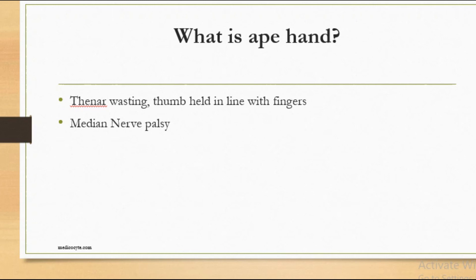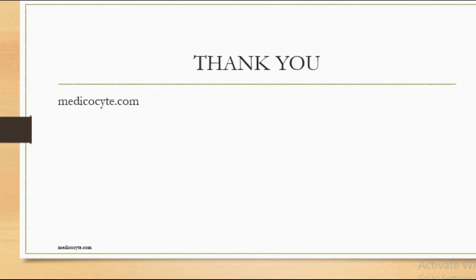Ape hand should not be confused with claw hand. In ape hand, there is thenar wasting with the thumb held in line with the fingers, and it is due to median nerve palsy.